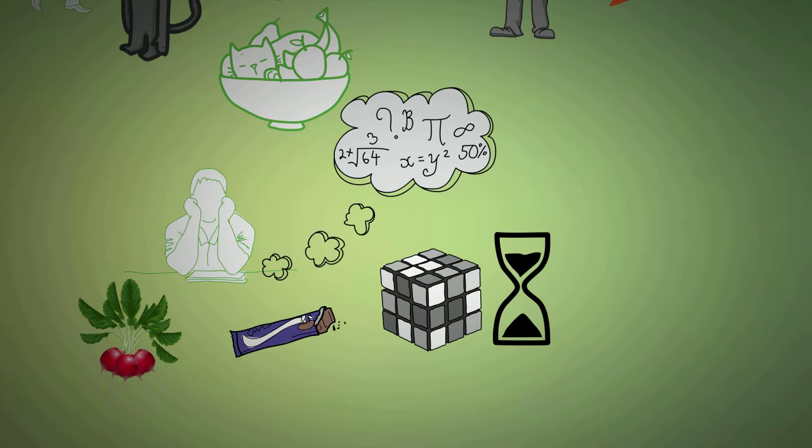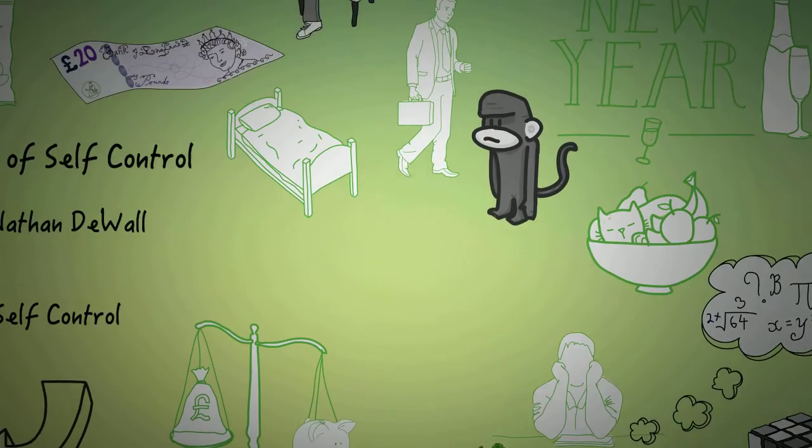They found that the people who were told not to eat chocolate, and hence spend self-control energy, gave up much quicker because they had less self-control energy to spend solving the puzzles.